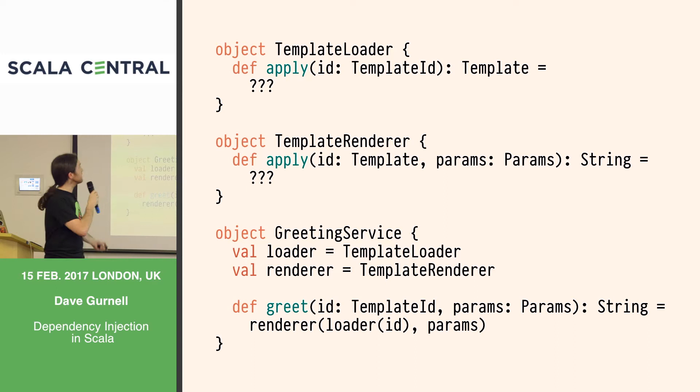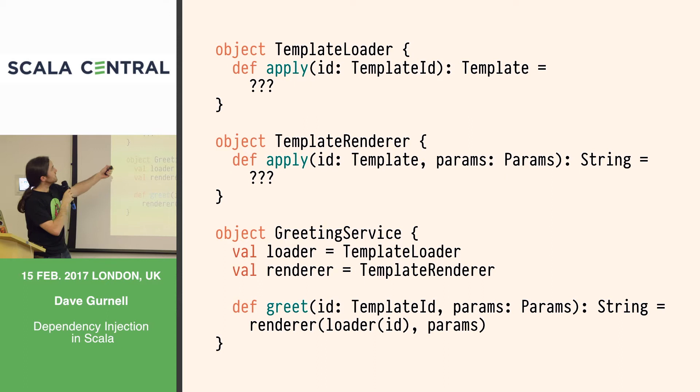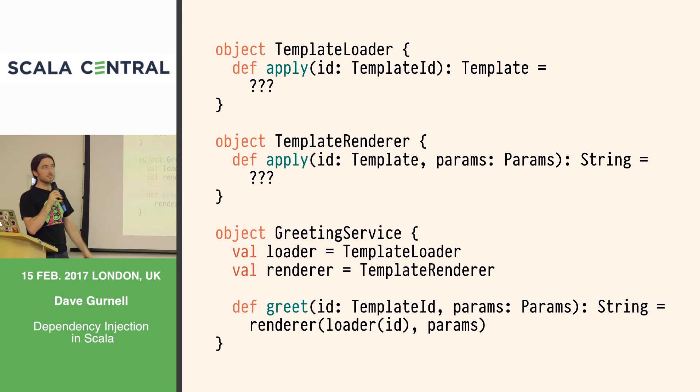Here's some code. We've got a template loader, a template renderer, and our greeting service. I'm not going to concentrate on what's in these things, because we're talking about how we get references to these components inside the service. Notice that I've hard-coded all the dependencies here — these are all objects, all vals. Can't change anything. It's all hard-wired.